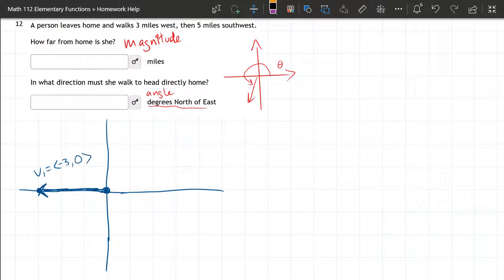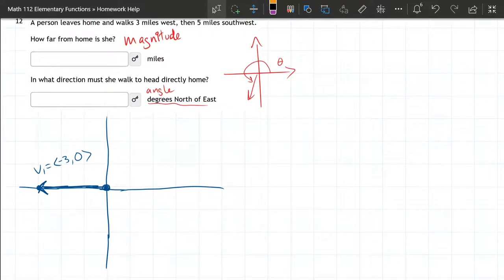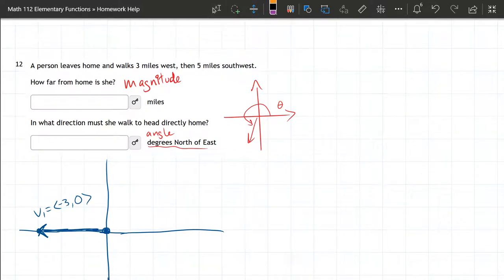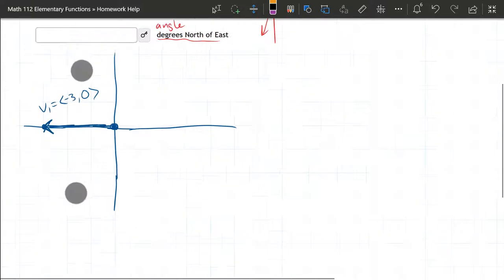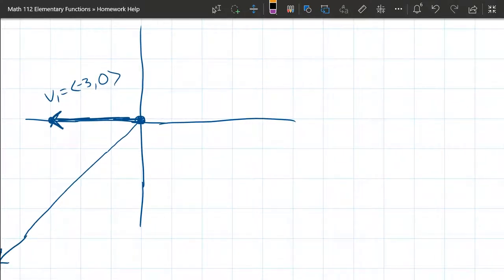The next vector is five miles southwest. West is to the left, south is down, so we're going southwest. It doesn't say how far between south and west, so when that happens it's halfway between south and west. It's going down to the left, and the question is how far. It's supposed to go five units in this direction, so you don't want to go over five and down five, you want to go five right here.